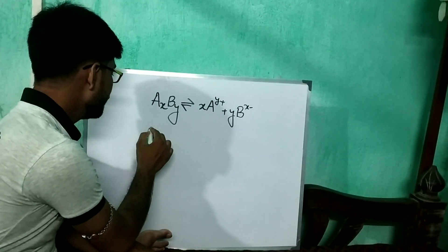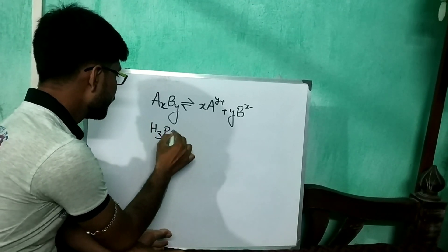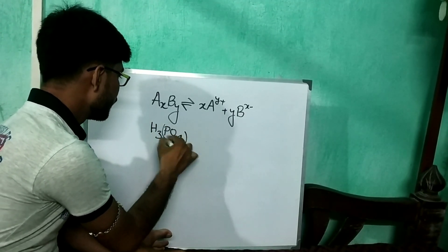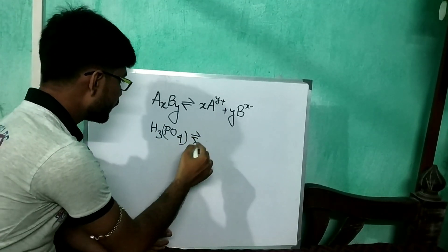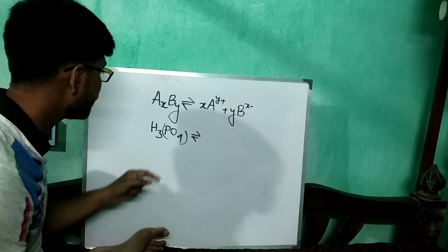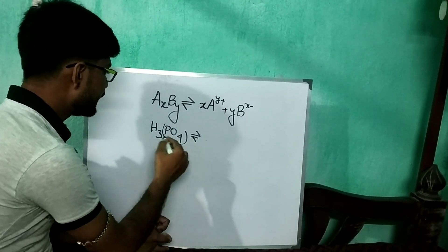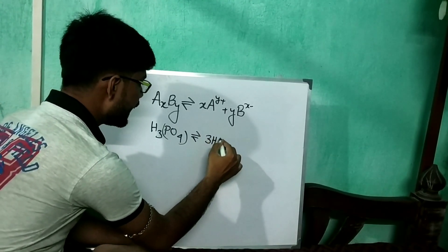Suppose you are given H3PO4. When it will ionize, following this ionization process, I am ionizing this compound, this acid, phosphoric acid H3PO4. So that will be 3H+ plus PO4 3-.